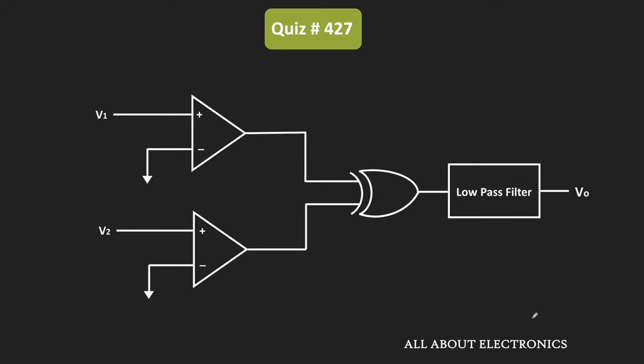If you closely observe this circuit, it consists of two comparators. The two sinusoidal voltages V1 and V2 are applied to these comparators. The outputs of the two comparators are given to the XOR gate, and then the output of the XOR gate is given to the low-pass filter. The cutoff frequency of the low-pass filter is equal to 0.1 Hz, so this low-pass filter gives us the average value.